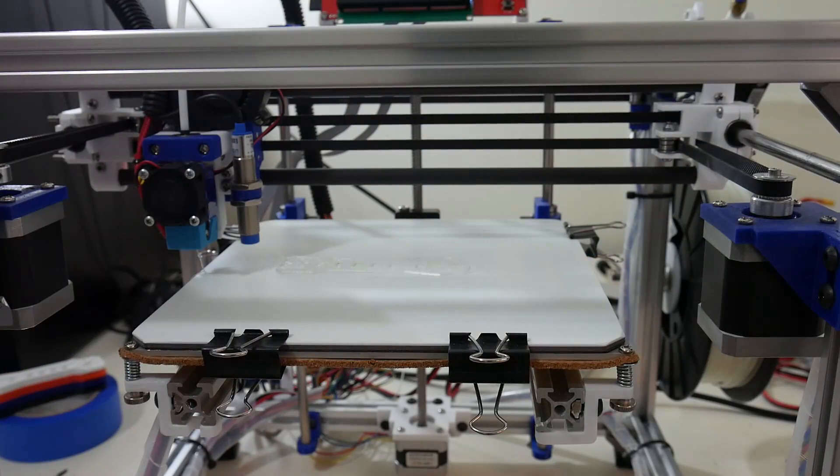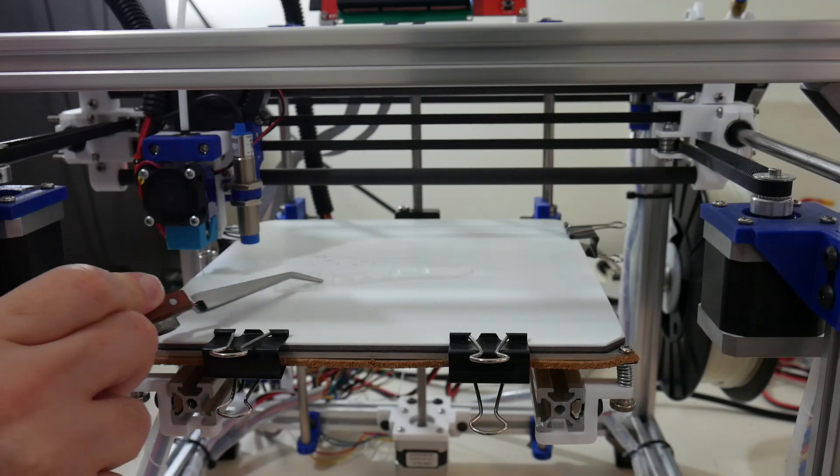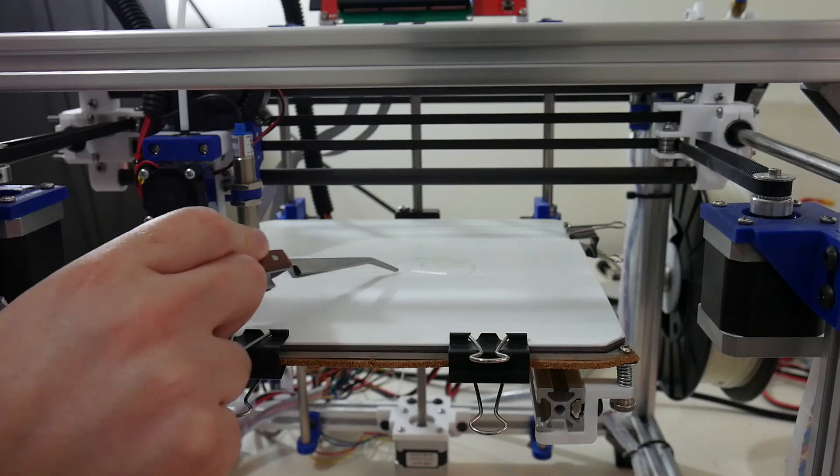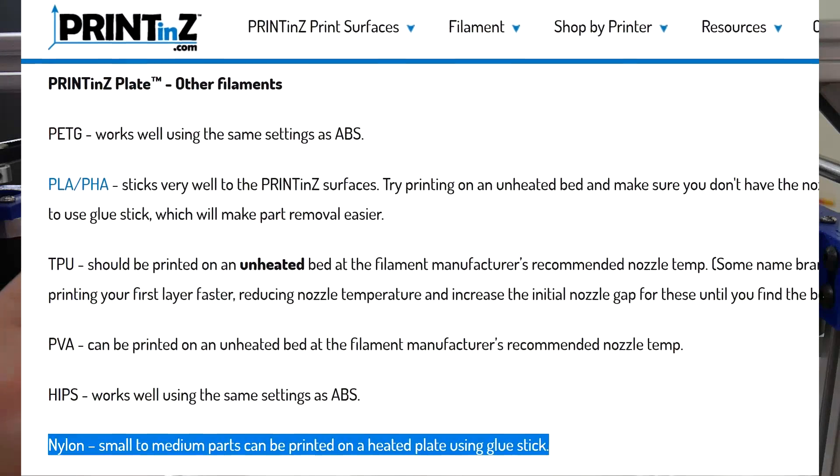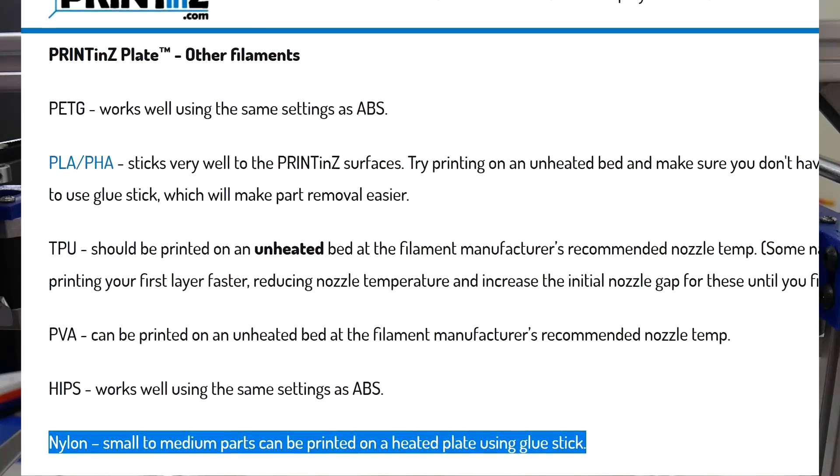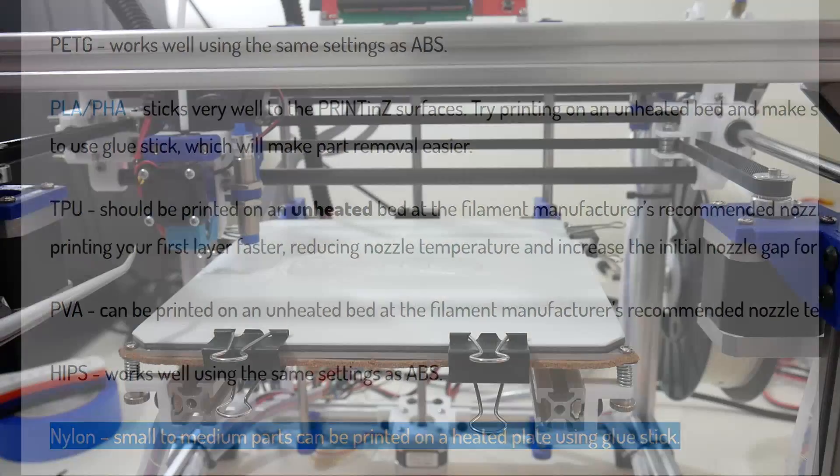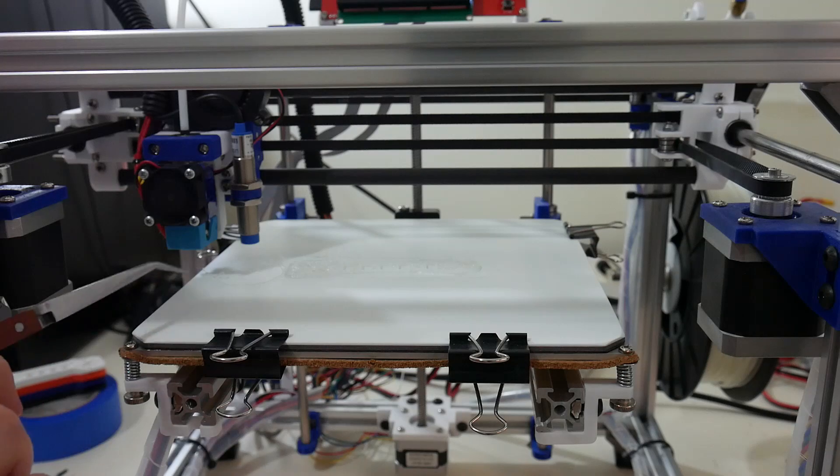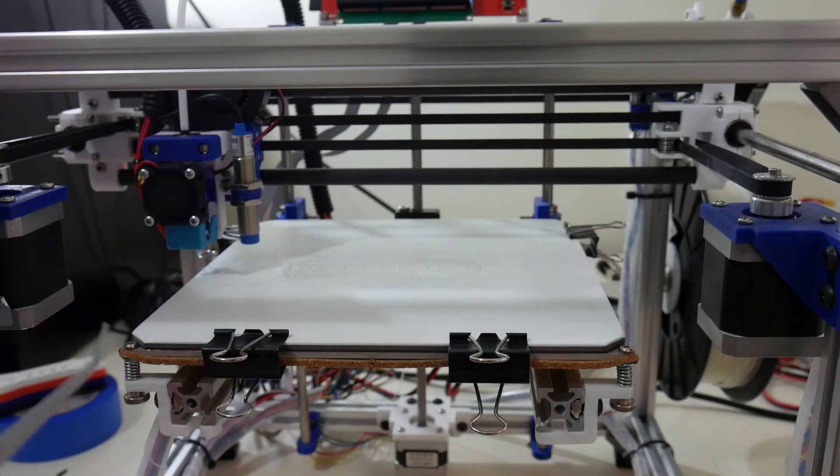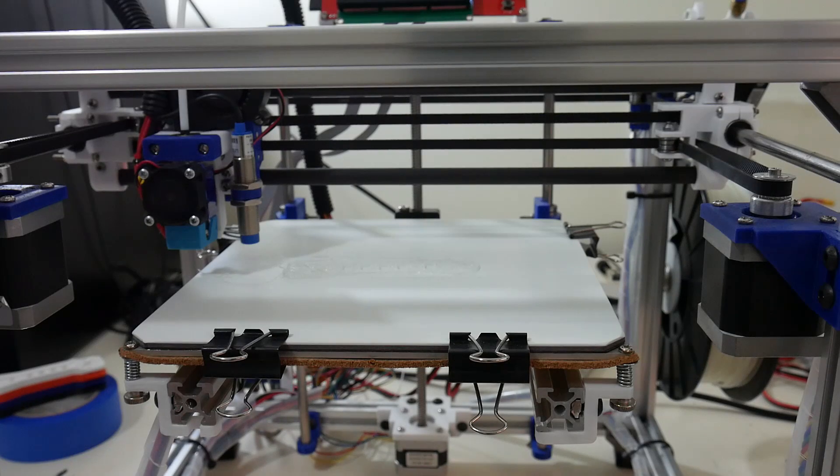I've stopped this print halfway through because the nylon has lost adhesion with the bed. As you can see, it's just moving around. Looking on the PrintinZ website on the technical guide, it looks like if you're printing with nylon, you need to use some glue on the PrintinZ plate to assist in adhesion. I've also confirmed you can use blue painter's tape over the top of this material, but unfortunately, nylon doesn't stick to the PrintinZ plate.